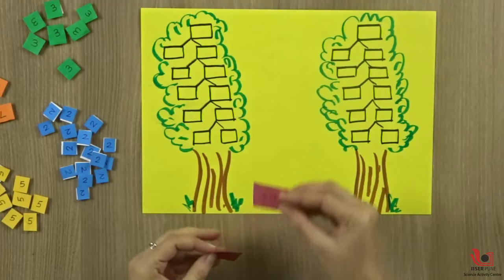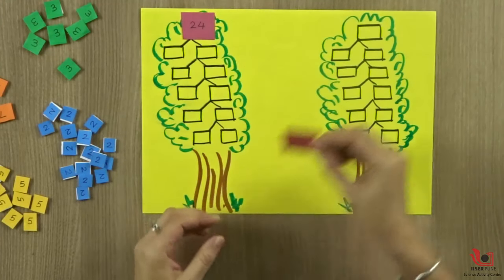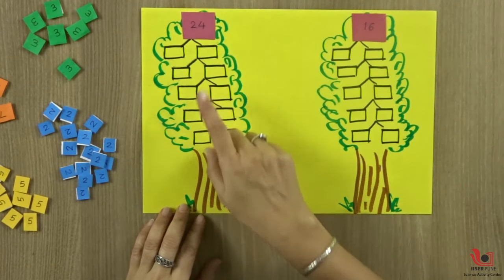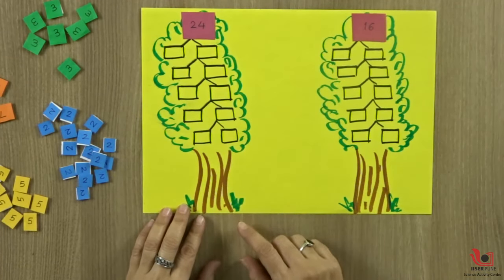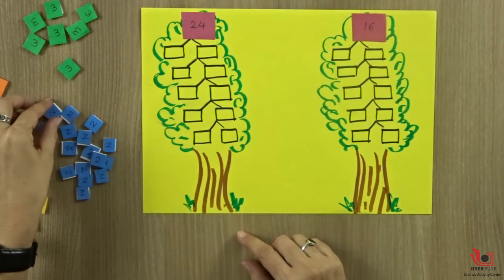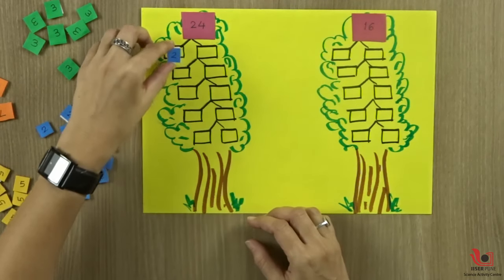This is a sheet. I have drawn two factor trees on it. We will place the numbers here. Let's start factorizing 24 first. 24 is an even number, so we start with the smallest prime number 2.